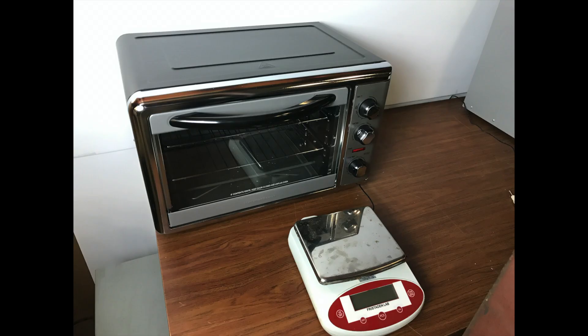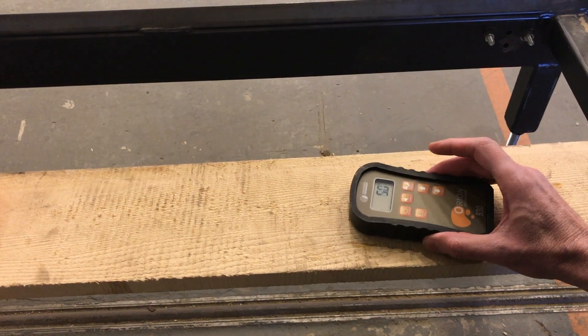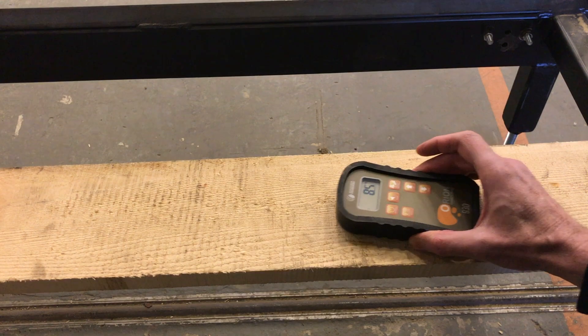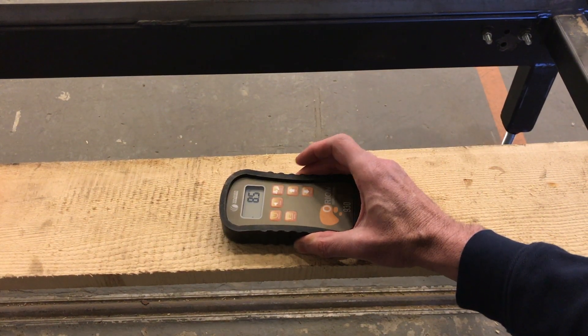For the oven dry test, we'll be using an oven and a scale. But first, let's measure the wood with a meter and then gather up some samples.